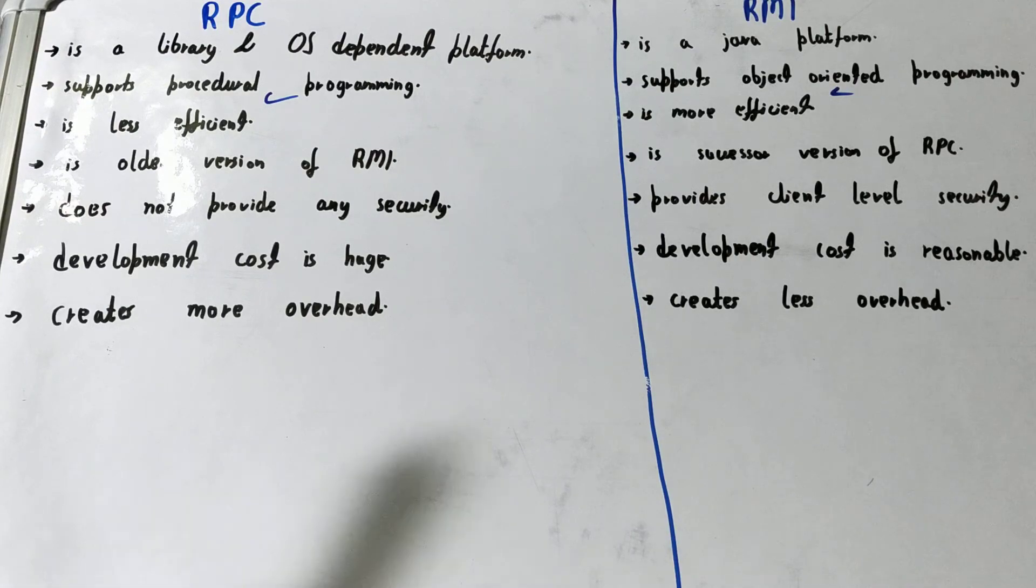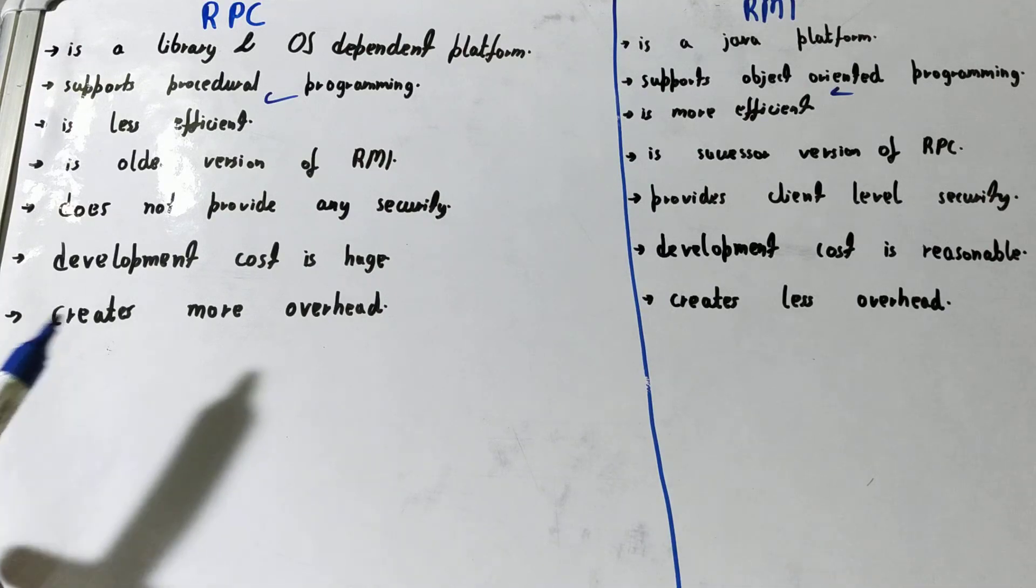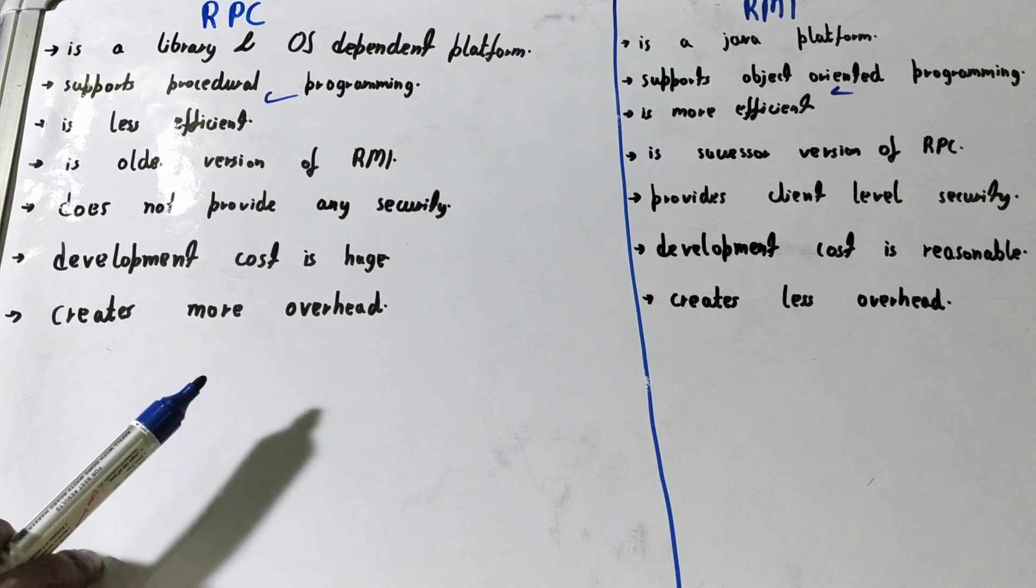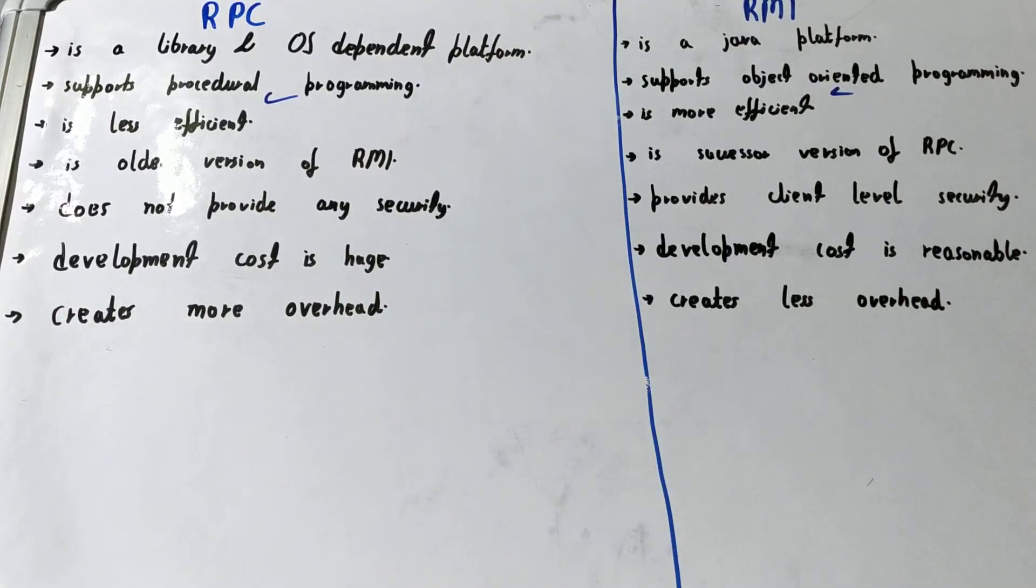RPC development cost is huge because it involves lots of lines of code. RMI development cost is reasonable or reduced because it uses object-oriented programming languages. Additionally, RPC creates more overhead whereas RMI creates less overhead.